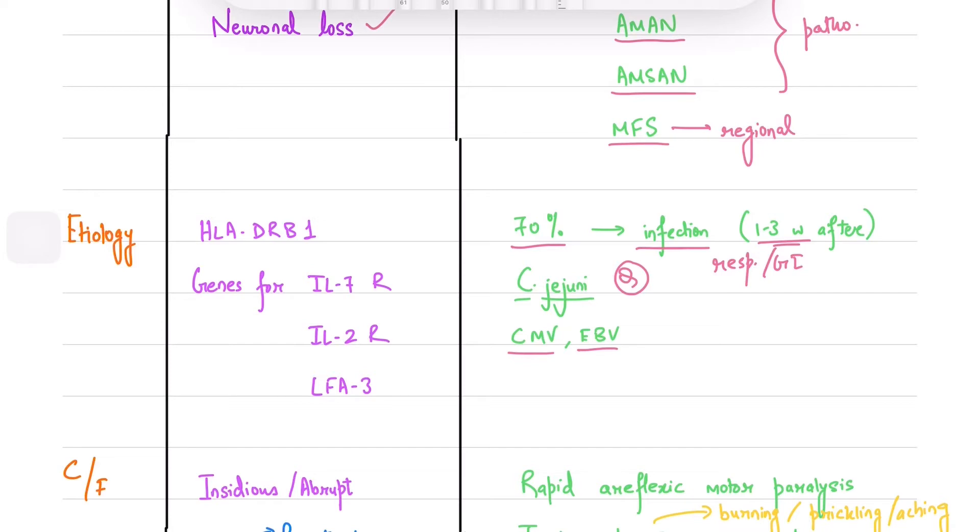The strongest susceptibility to MS is due to HLA-DRB1 gene on the MHC. We have also discovered genes for IL-7 receptor, IL-2 receptor, and LFA-3 which also play a role.